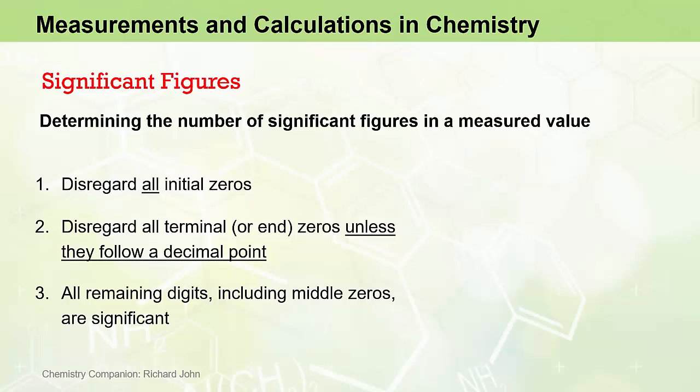Just a reminder, the three rules for determining the number of significant figures in a measured value are: 1. Disregard all initial zeros. 2. Disregard all terminal or end zeros unless they follow a decimal point. 3. All remaining digits, including middle zeros, are significant.